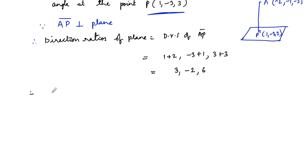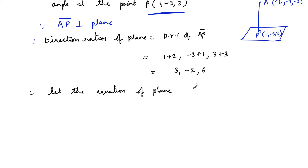So therefore let the plane equation be 3x - 2y + 6z + d = 0.